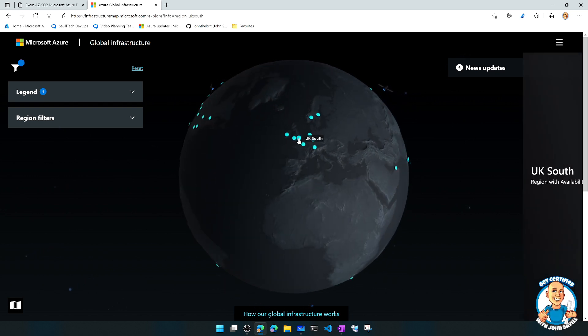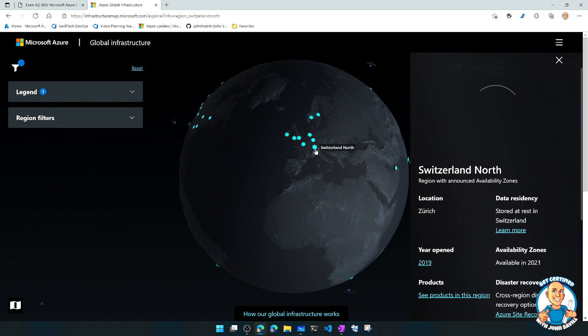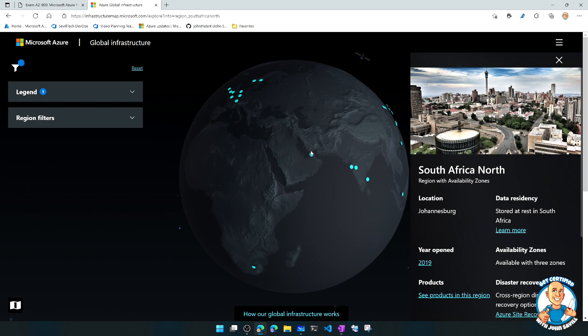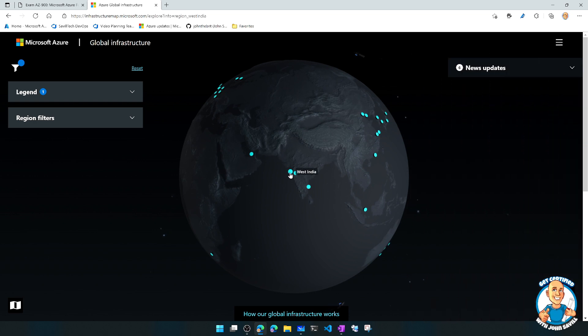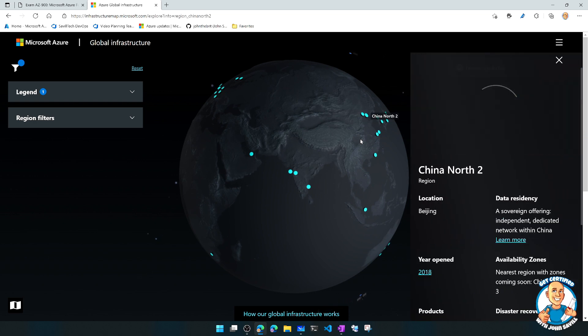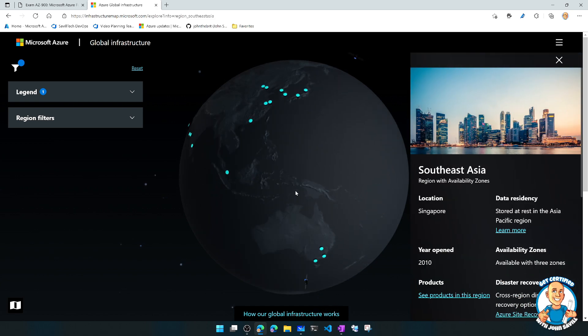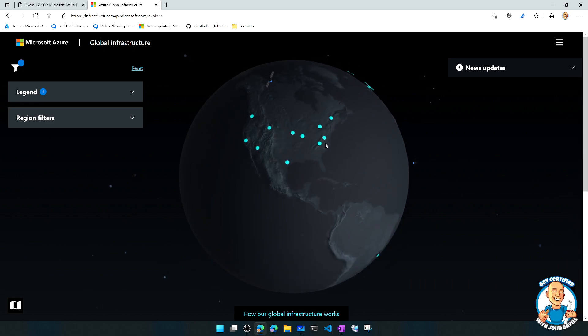So here I can see there's lots, for example, in Europe. I can see there are regions available in South Africa, in United Arab Emirates, West India, China, Southeast Asia. There's ones in Australia.